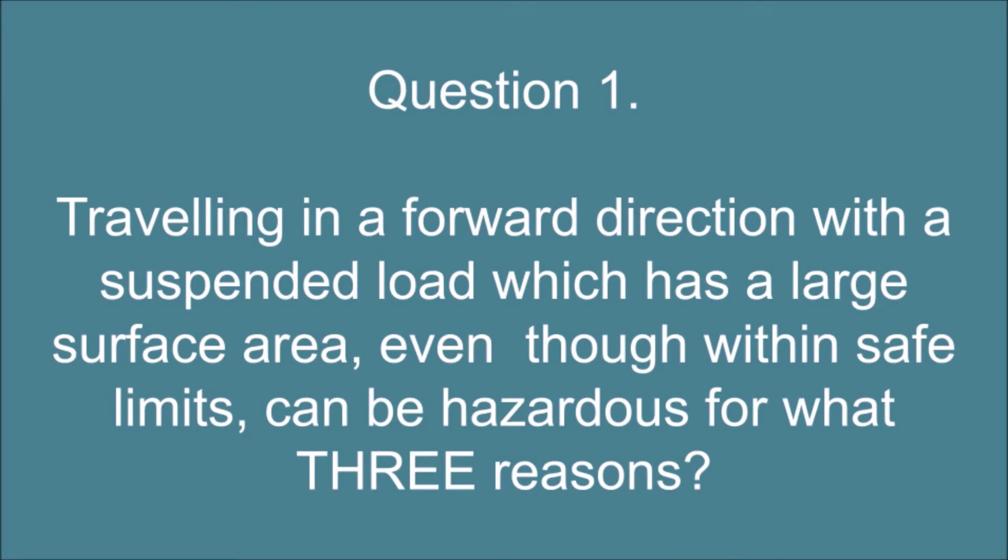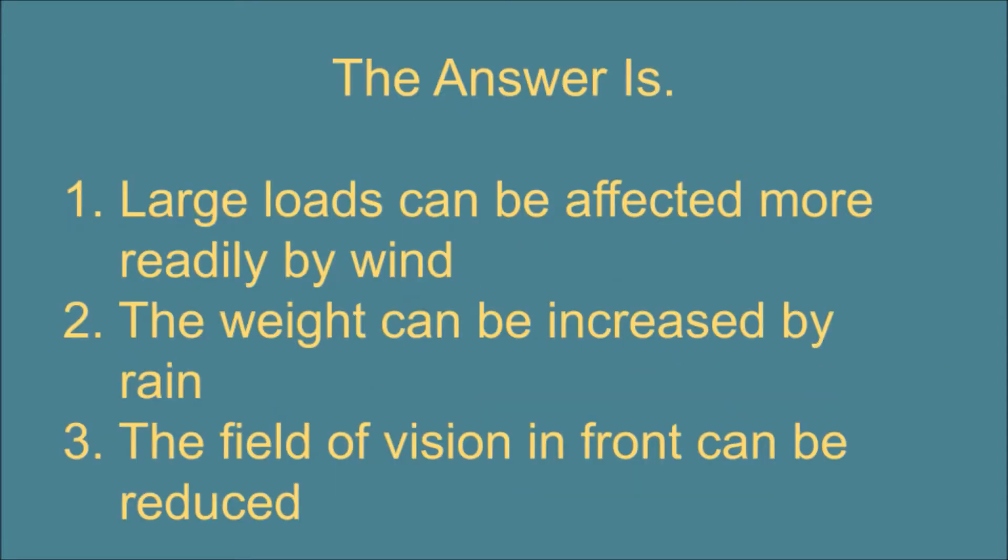Question 1. Traveling in a forward direction with a suspended load which has a large surface area, even though within safe limits, can be hazardous for what three reasons? The answer is: 1. Large loads can be affected more readily by wind. 2. The weight can be increased by rain. 3. The field of vision in front can be reduced.